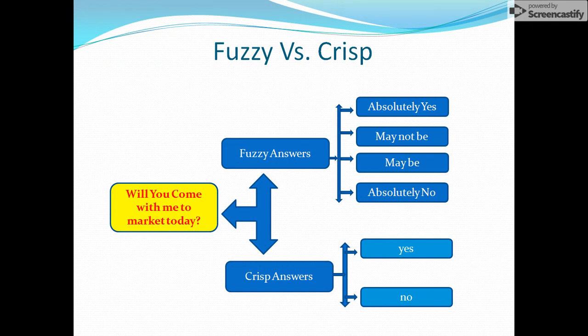As I was discussing that there is a concept of crisp. If you are giving the clear answer in terms of yes and no, in terms of one and zero, then it will say it's crisp. So if you have some clear answer of any question, some clear thing of any problem, in that case, that will be the crisp one. Say you are having an example, will you come with me to the market today? Your crisp answers will be either yes or no.